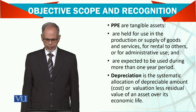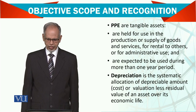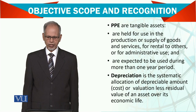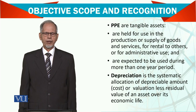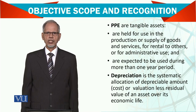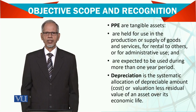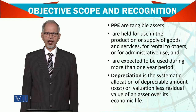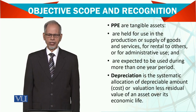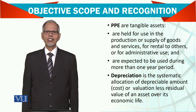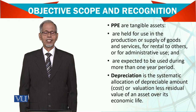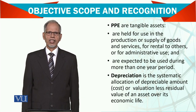Depreciation is the systematic allocation of the depreciable amount — that is, cost less residual value — of an asset over its economic useful life. We estimate a depreciation rate, and similarly we estimate the residual value, which is the salvage value when the asset expires its life. Cost minus residual value gives the depreciable amount, which will be allocated systematically. It's important that you cannot just charge any amount to the profit and loss account in any year — there should be some systematic method charged to the income statement.